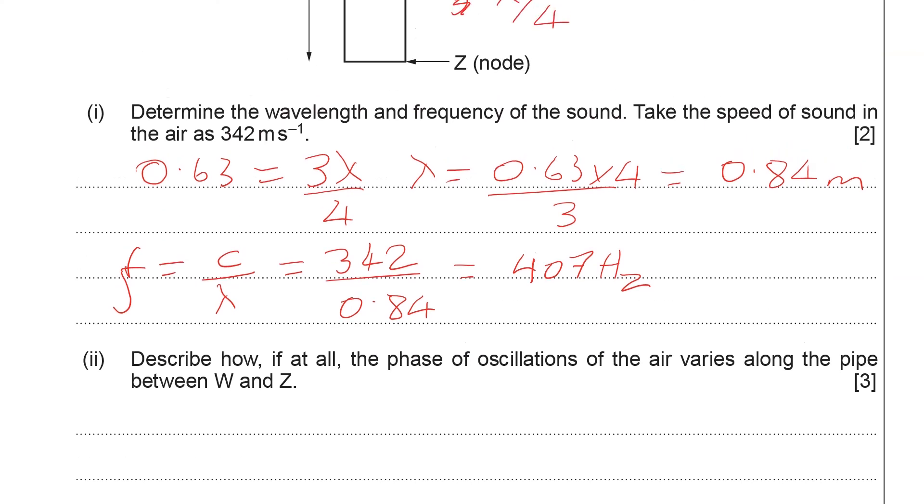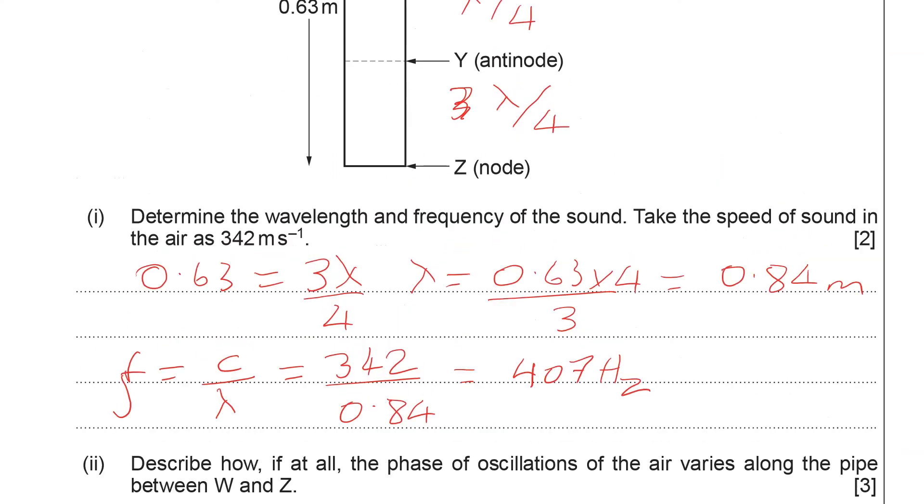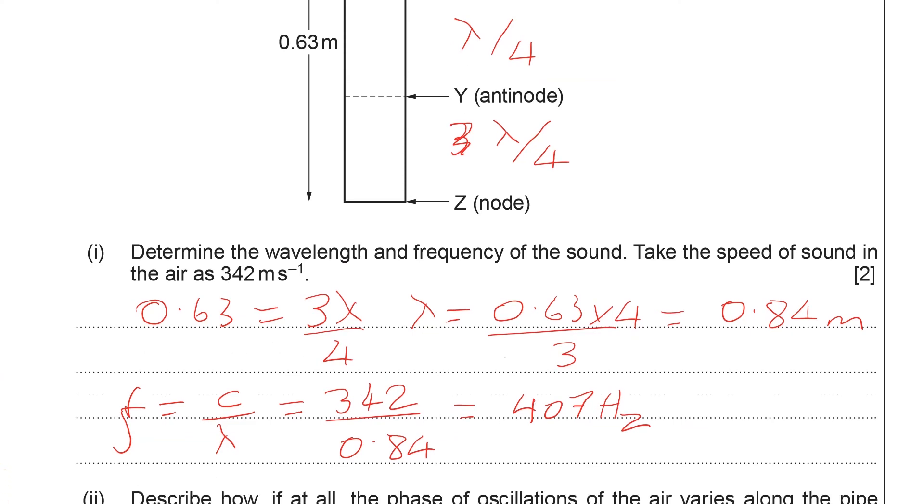Finally, we've got to describe how, if at all, the phase of oscillations of the air varies along the pipe between W and Z. Well, the key point to remember here is that on a standing wave, all points between a pair of nodes are oscillating in phase. So all the points between X and Z are all in phase. But the particles in between a pair of nodes are in antiphase with the particles in the next node-to-node loop.